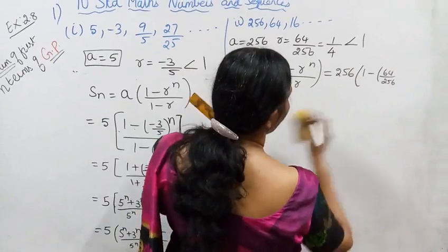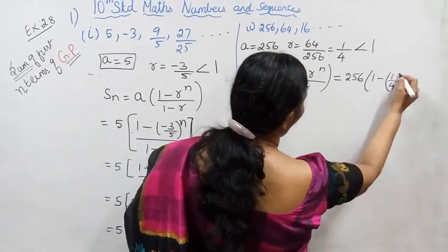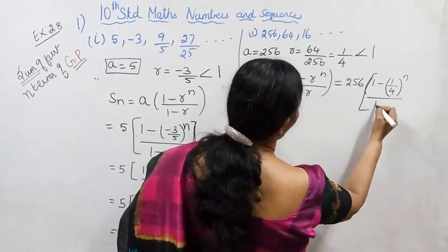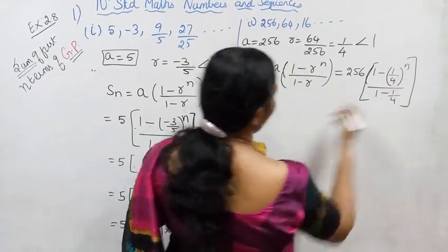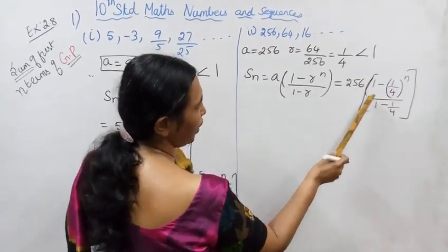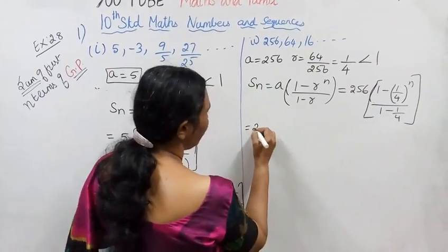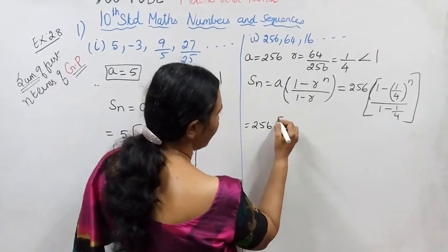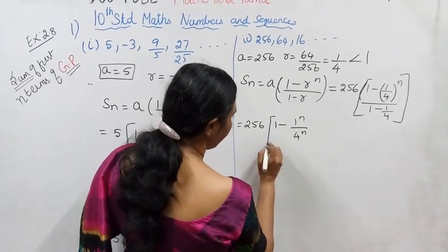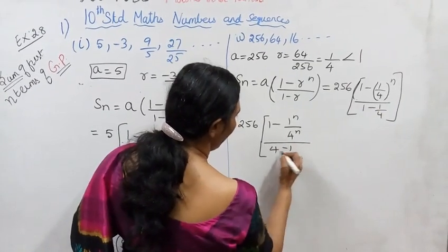Sorry. r is on the control of 1 by 4. r is 1 by 4 the whole power n. D by 1 minus r. 1 minus 1 by 4. a is 256. 1 minus r is 1 by 4 the whole power n. 1 minus r. 1 minus r is 1 by 4. That was: 256. 1 minus 1 power n by 4 power n, divided by 4 minus 1 by 4.